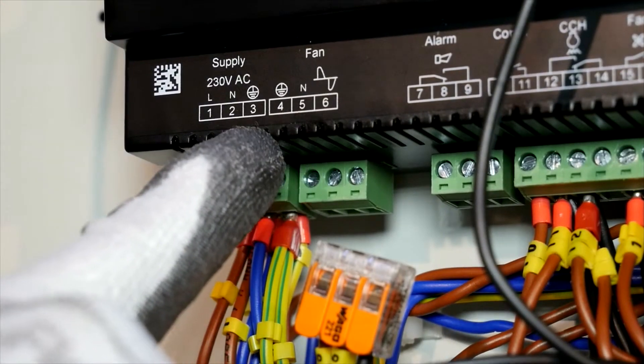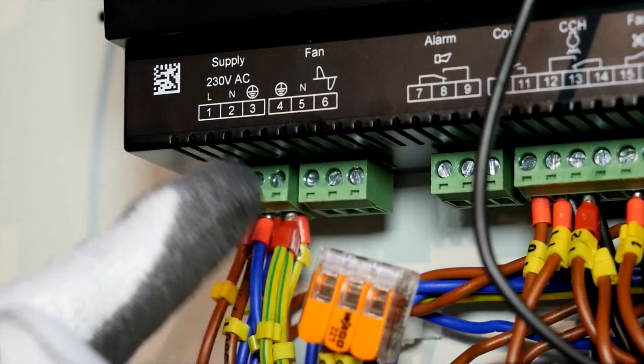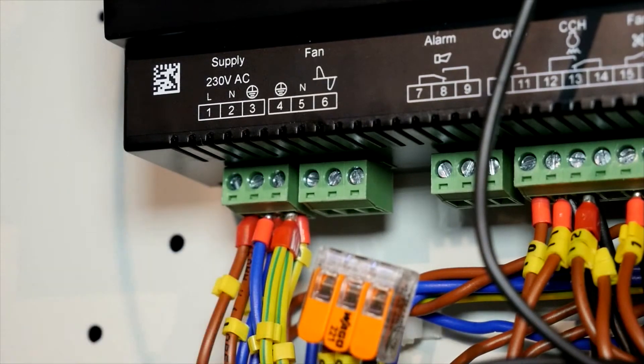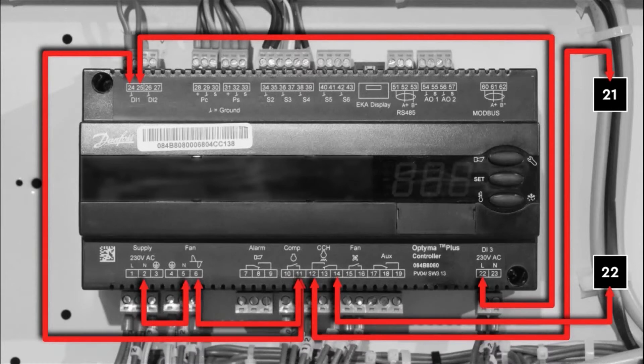Connect Terminal 2 with Terminal 5, the neutral, and Terminal 3 with the Terminal for the Earth. The fan motor will work.